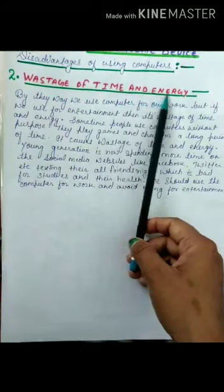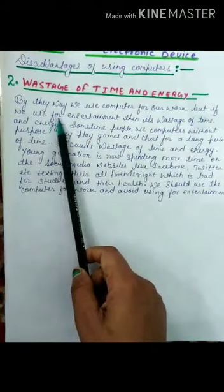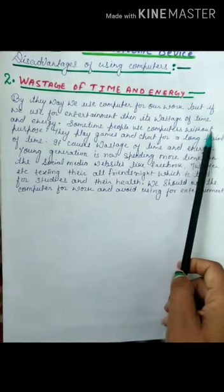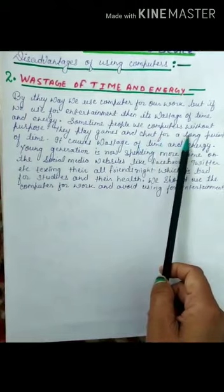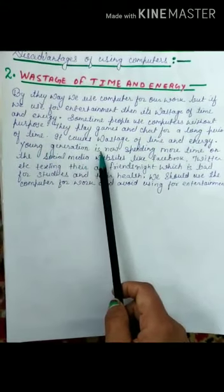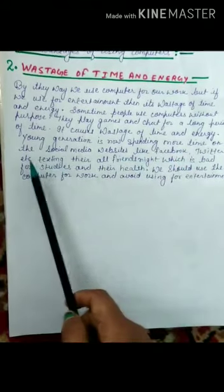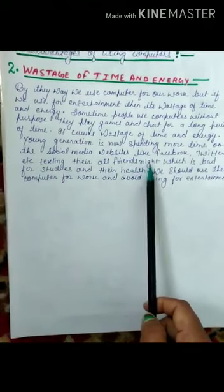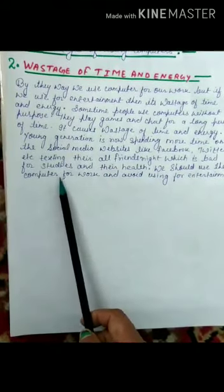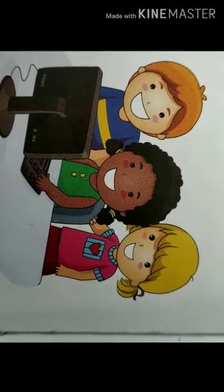Next point: social media causes waste of time and energy. The young generation is now spending more time on social media — websites like Facebook, Twitter, etc. — texting their friends all night, which is bad for their studies and their health. We should use computers for work and avoid using them for entertainment.